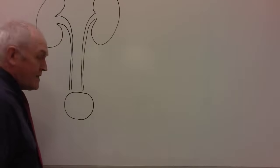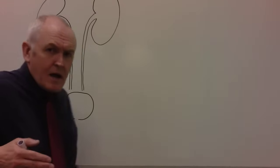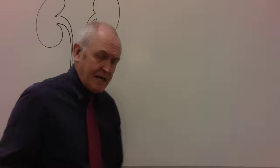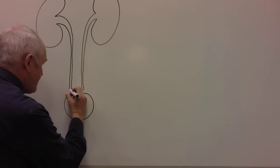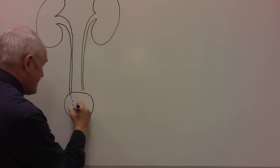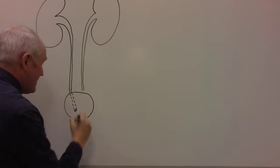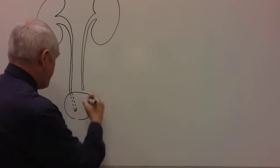The ureters go in behind the bladder — the ureters actually pass behind the bladder and they actually go in near the base of the bladder.